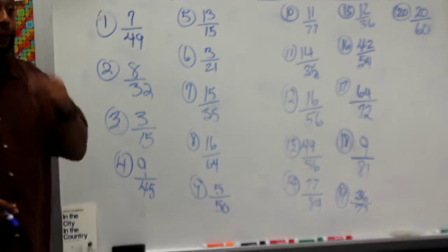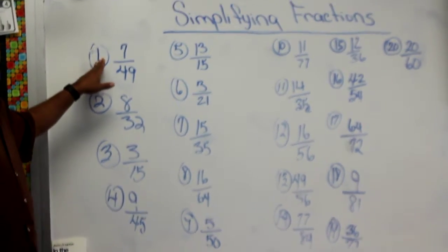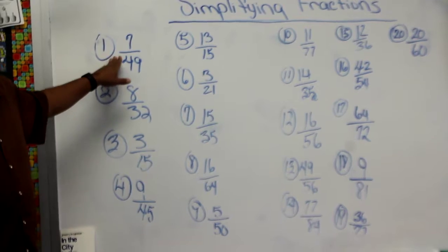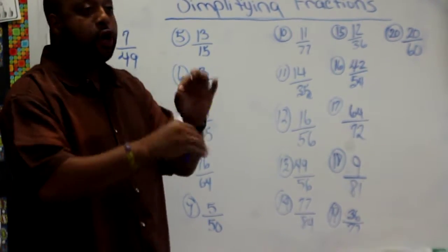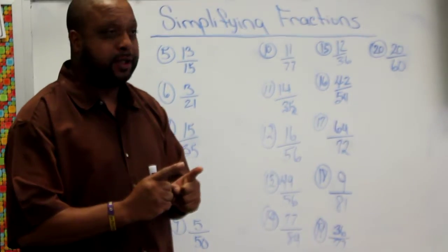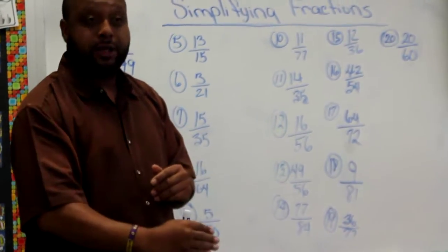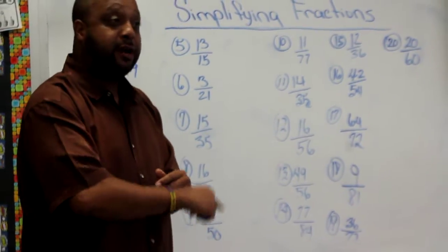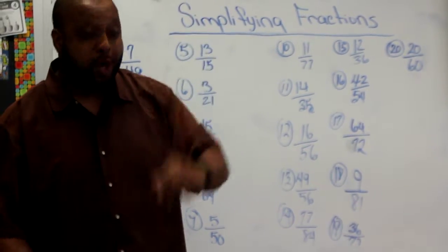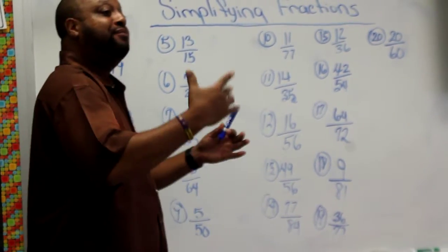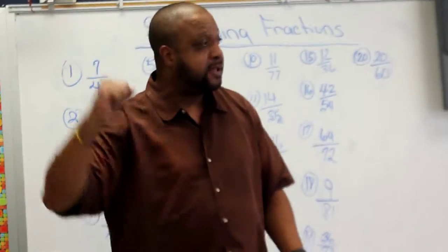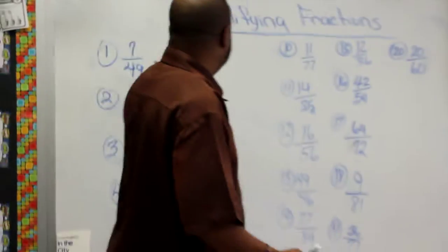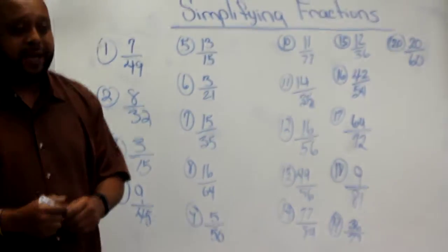Can you identify the first fraction boys and girls? 7 over 49. What is it? 7 over 49. Now when you simplify a fraction, the numerator and the denominator must share a common factor of 1. I told you all to list all of the factors for 7 and all of the factors for 49 and find the greatest common factor and divide.